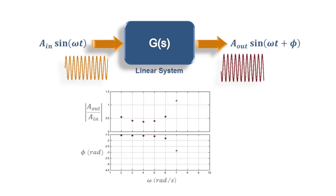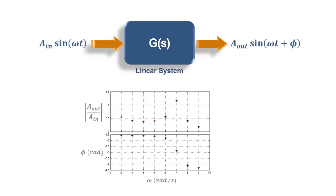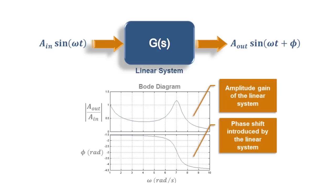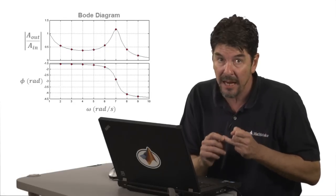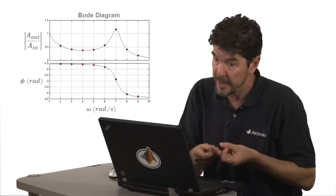By repeating this process for a number of different pure tone frequencies, we can construct a trace for the amplitude variation, also known as the gain of the system, as well as a trace for the phase shift introduced by the system for any given frequency range. This type of frequency response diagram is what is normally called a Bode plot.